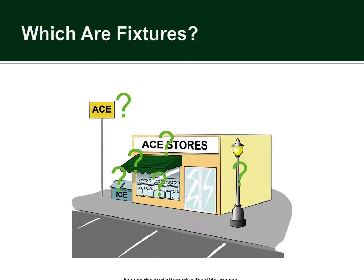Here's another look at fixtures. Pretty much everything you see here would be a fixture except for those products sitting in the window of the stores. It's good to specify these things in the sales contract to avoid misunderstanding.